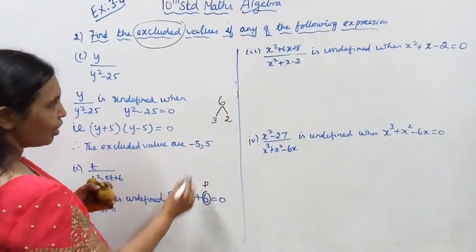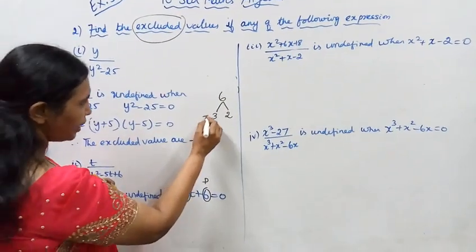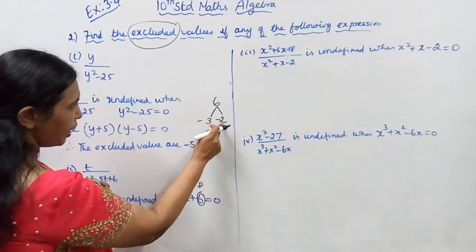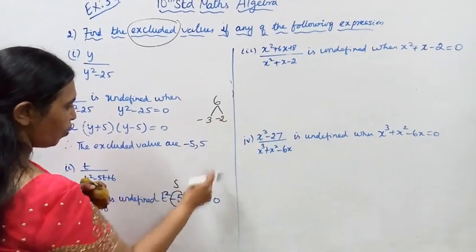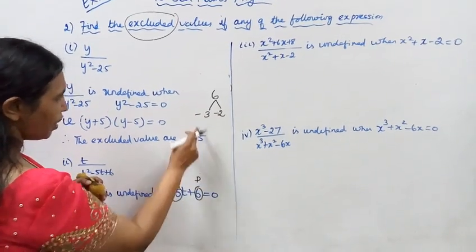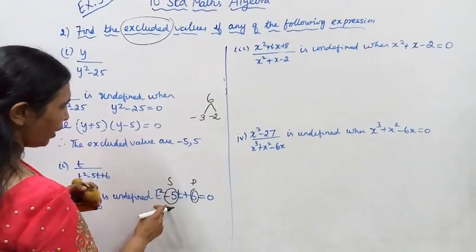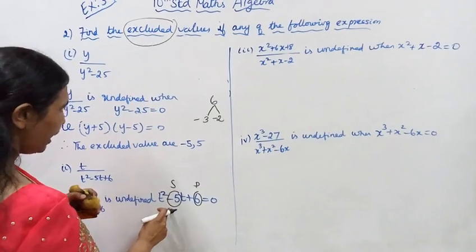The sum must be minus 5, so we use minus 3 and minus 2. Minus 3 times minus 2 equals plus 6, and minus 3 plus minus 2 equals minus 5. So the factors are (t − 3)(t − 2).